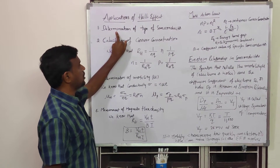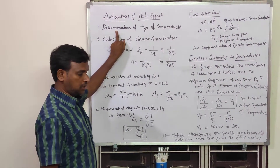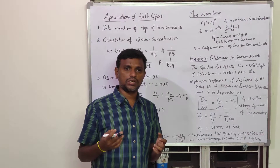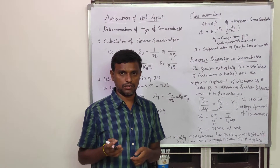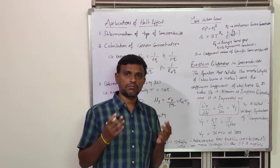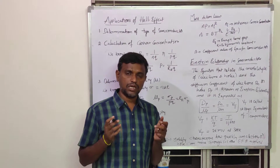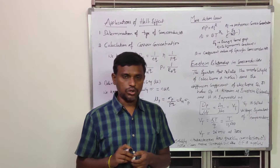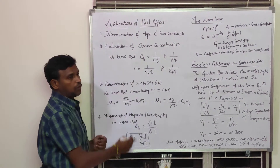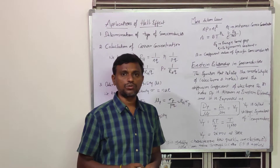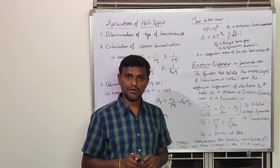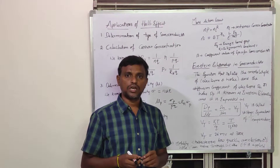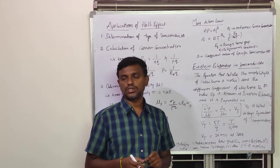The first application is determination of the type of semiconductor. If a semiconductor is given to us, we can determine whether it is an N-type or P-type semiconductor by calculating the Hall voltage and Hall coefficient. If the Hall voltage and Hall coefficient are negative, the material is an N-type semiconductor. If the Hall voltage is positive, the material is a P-type semiconductor.